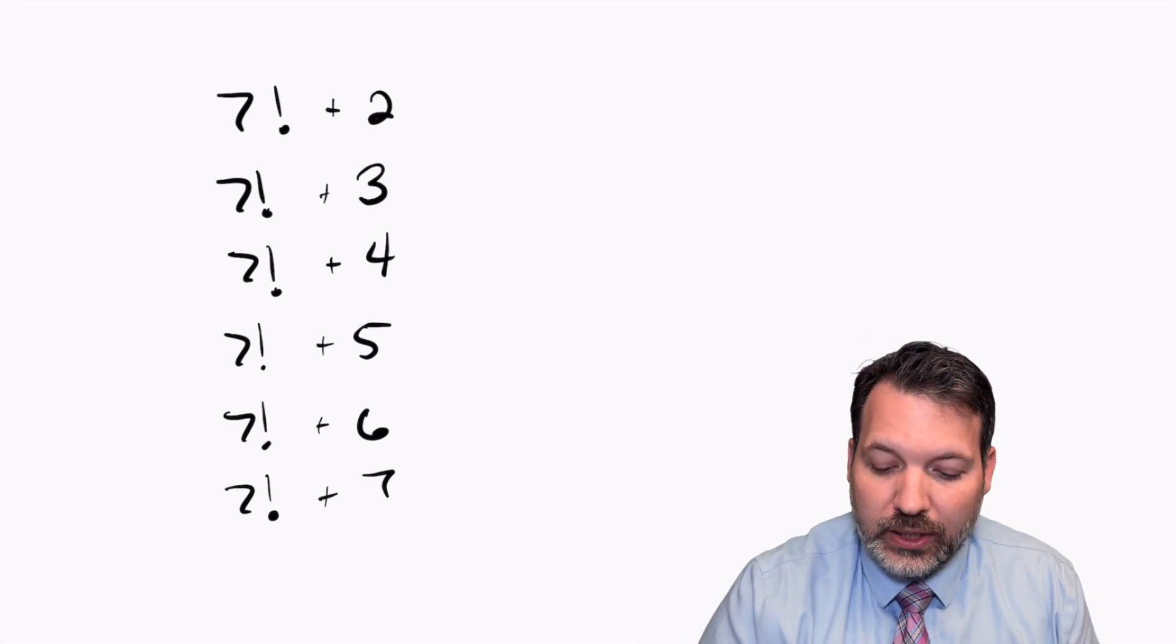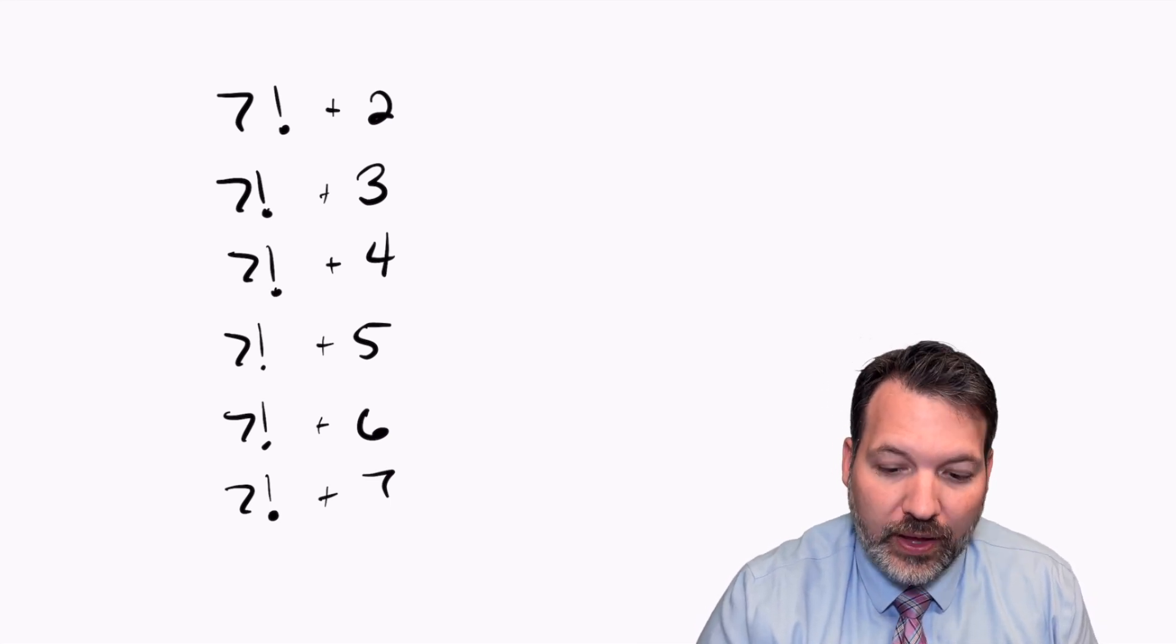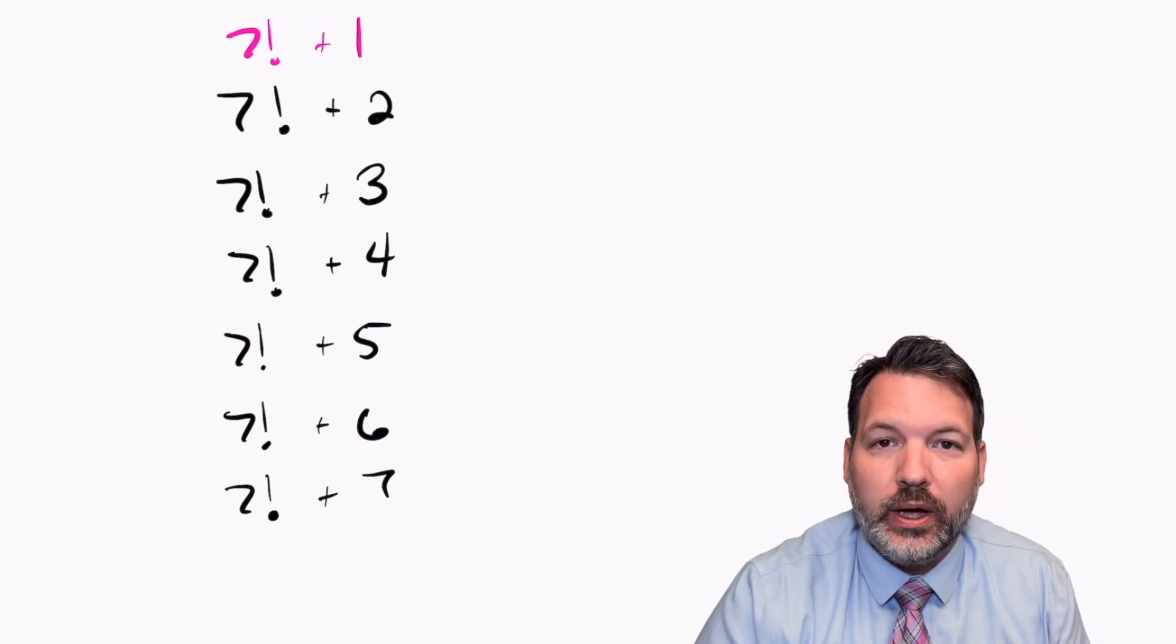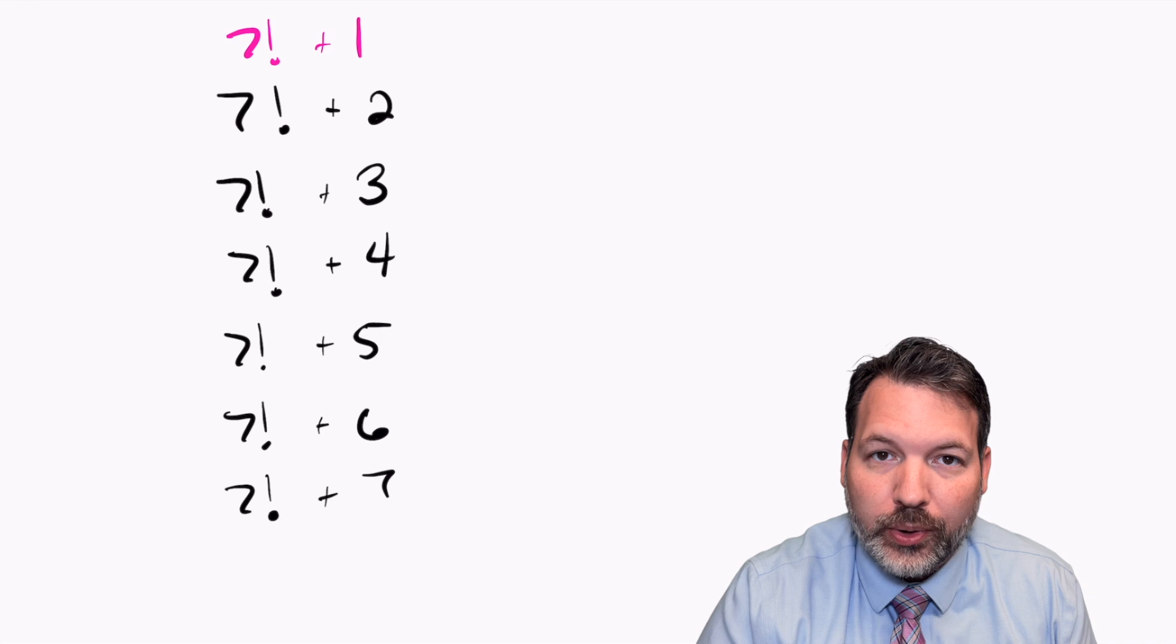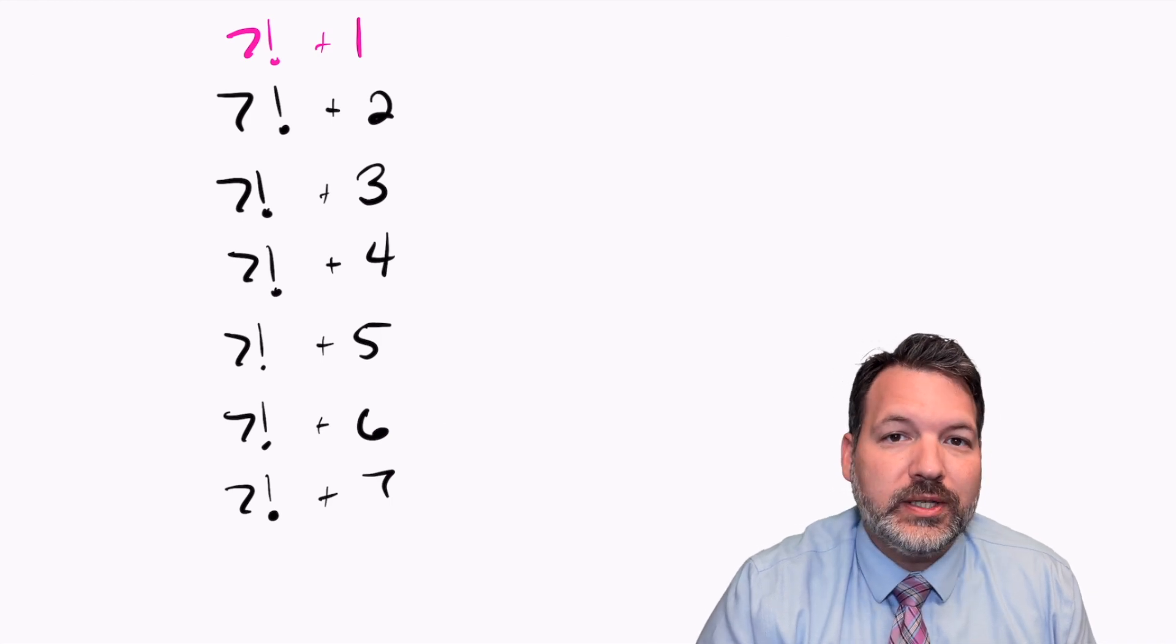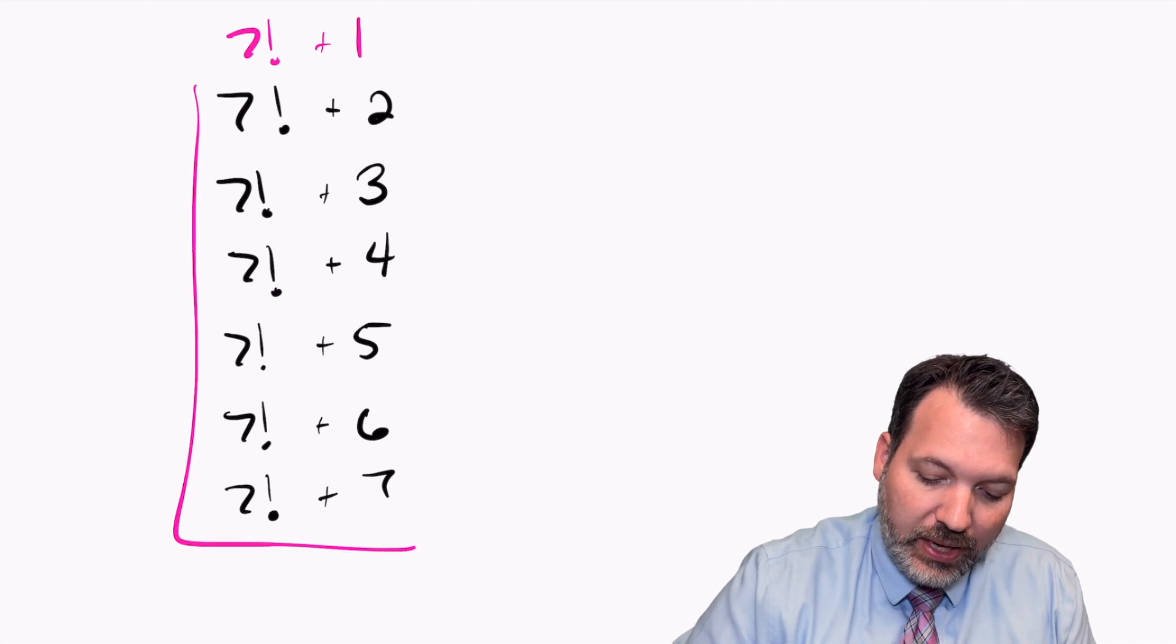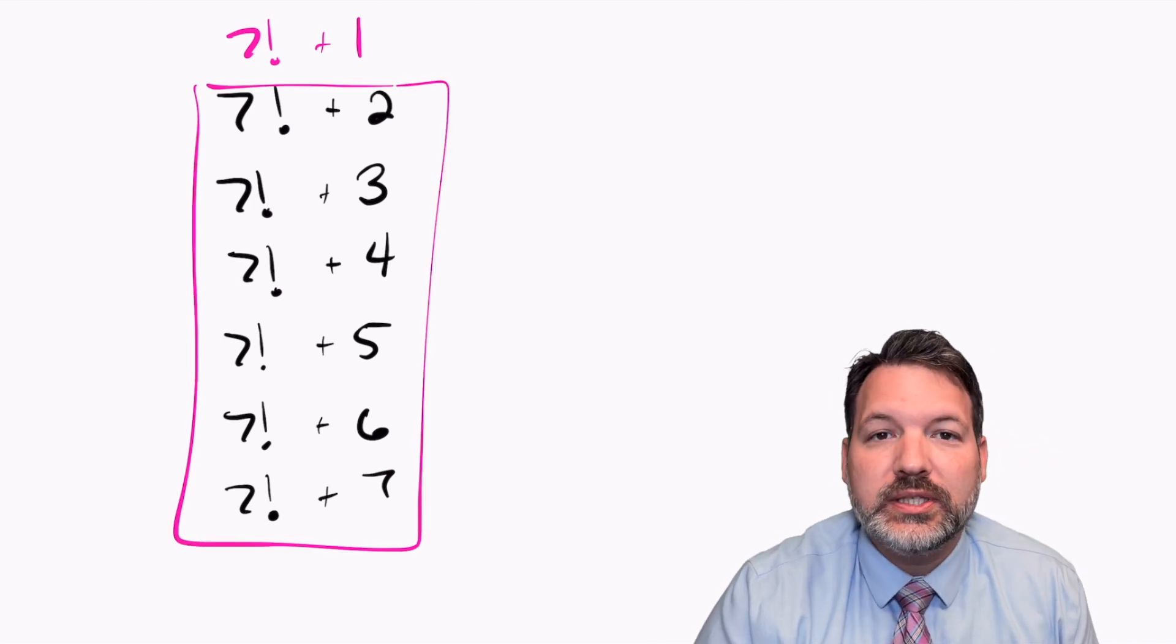Now, it is important to note the gap might be even larger than these six numbers in a row. That is, we don't know for sure that 7 factorial plus 1 isn't also a composite number. But if it were a composite number, that just means that our gap is actually even bigger. The gap is guaranteed to be at least as large as those six numbers in a row.